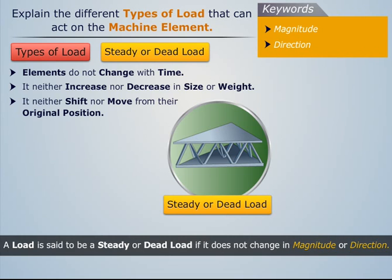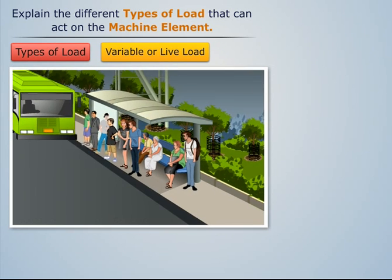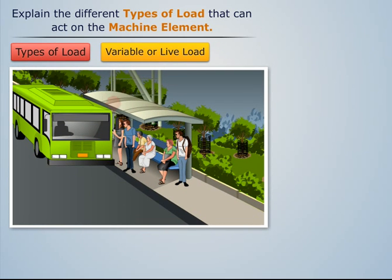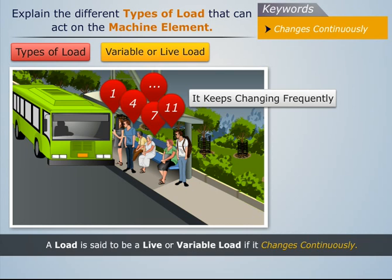Now let's understand what variable load is. Consider a bus — we know that the number of passengers in the bus is not constant; it keeps changing frequently. Thus, a load is said to be a live or variable load if it changes continuously.